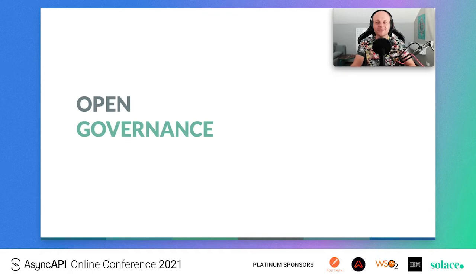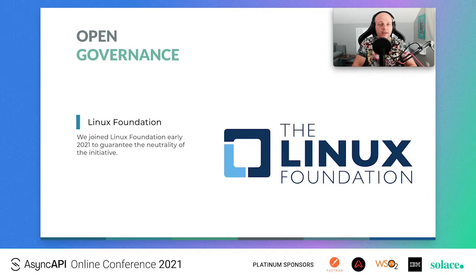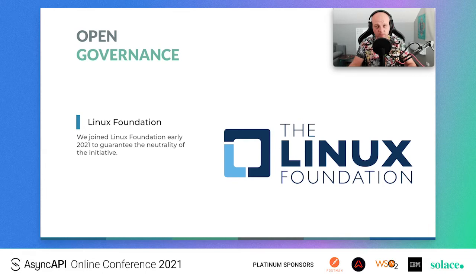So open governance — what is it and what's the history? If you don't know it yet, at the end of March 2021, AsyncAPI Initiative joined the Linux Foundation. We heard from many different areas of the project and from big tech companies that for a project like this, it's important that it reaches a neutral ground where the IP of the project is in the ownership of the foundation. The best way was to join the Linux Foundation.